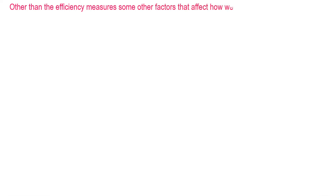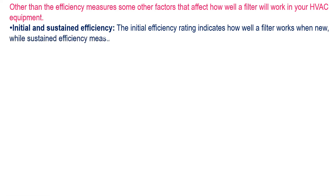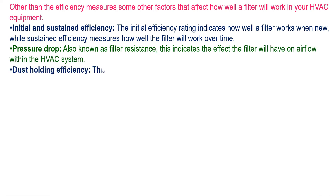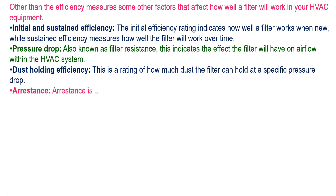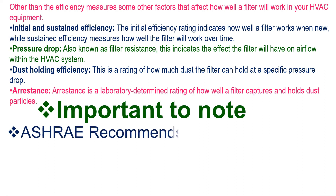Other than efficiency, some other factors affect how well a filter will work in your HVAC equipment. Initial and Sustained Efficiency: the initial efficiency rating indicates how well a filter works when new, while sustained efficiency measures how well the filter will work over time. Next is Pressure Drop, also known as Filter Resistance, which indicates the effect the filter will have on airflow within the HVAC system. Next is Dust Holding Efficiency — a rating of how much dust the filter can hold at a specific pressure drop. Next, Arrestance — a laboratory determination of how well a filter captures and holds dust particles.